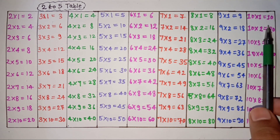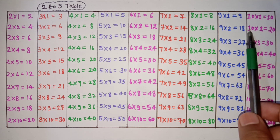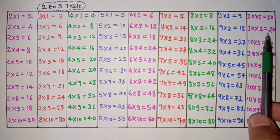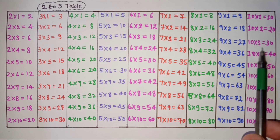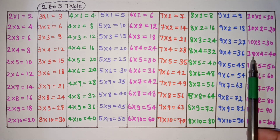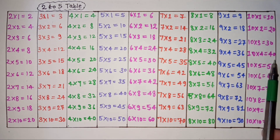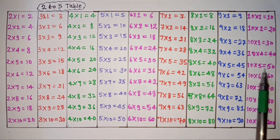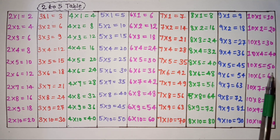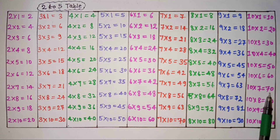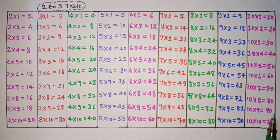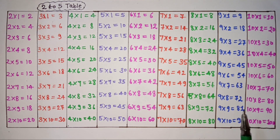Ten ones are 10, ten twos are 20, ten threes are 30, ten fours are 40, ten fives are 50, ten sixes are 60, ten sevens are 70, ten eights are 80, ten nines are 90, ten tens are 100. Thank you.